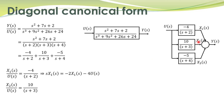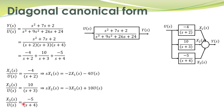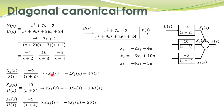Likewise, x2/u is given by this transfer function and can also be rearranged to write it in a similar way. The third transfer function can also be rewritten in this particular format. We have these equations which describe the same system differently. We can take the inverse Laplace transform to write them in the time domain: the inverse Laplace transform of s·X1(s) gives ẋ1 = −2x1 − 4u, and likewise for the other two equations.